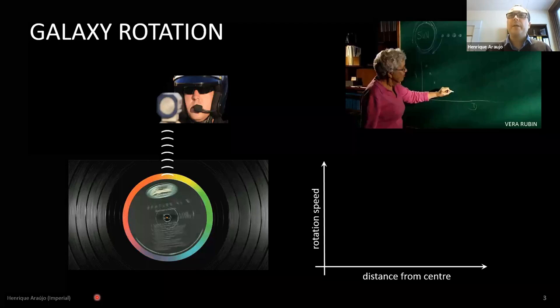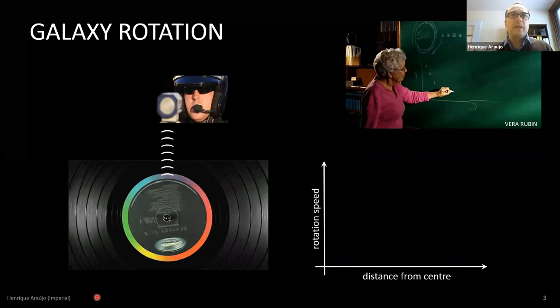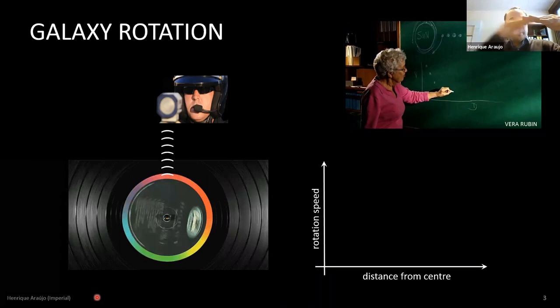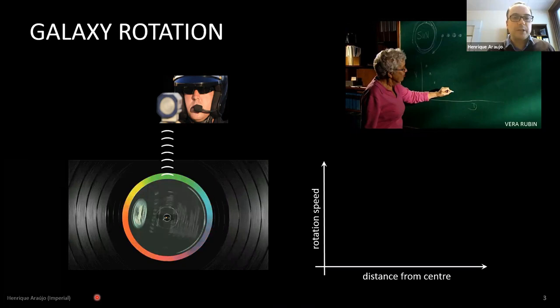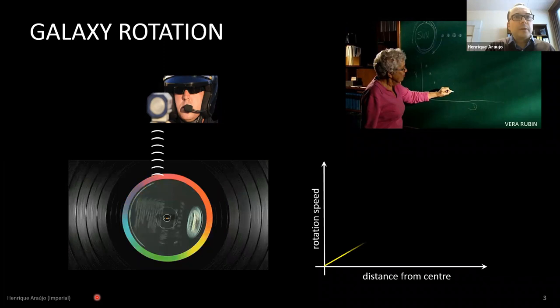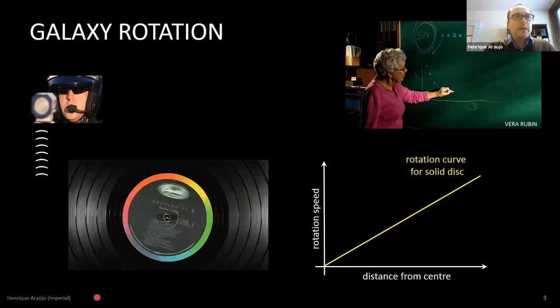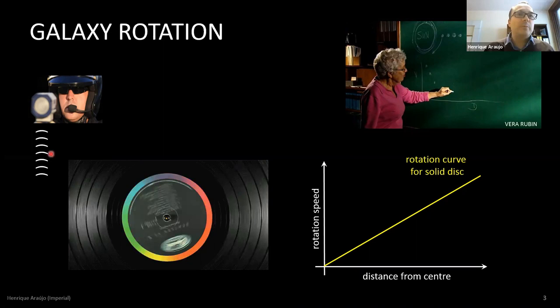People like Vera Rubin and Ken Ford started to measure how galaxies rotate. To do that, you have a spectrometer mounted on your telescope and you try to find a spiral galaxy caught edge-on, so your spectrometer is measuring along the plane of the galaxy. It's a bit like doing a radar measurement — you are measuring the Doppler shift of the light as you move from the center of the galaxy to the edge, detecting whether starlight shifts to the red if it's moving away or to the blue if it's moving towards you.